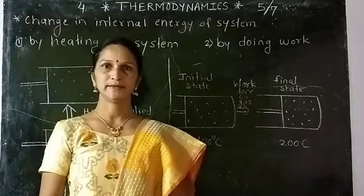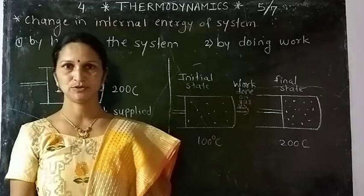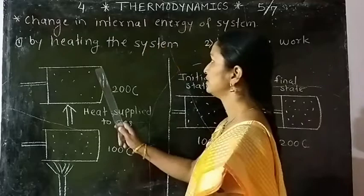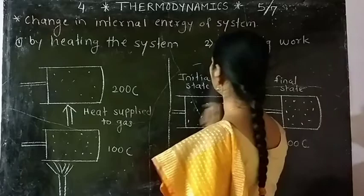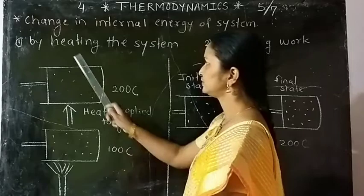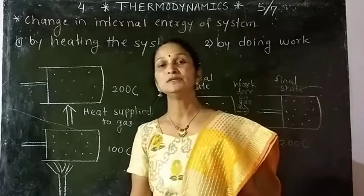The internal energy of a system can be changed in two ways: first, by heating the system, and second, by doing work. We will first consider the change in internal energy by heating the system.